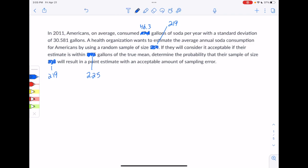Let's go ahead and get started. We'll focus initially on what is it they want us to find. They want us to determine the probability that their sample of size 219 will have an acceptable amount of sampling error. So it's a probability question. It's about the sampling error being acceptable, which means it would be less than 2.25 gallons of error.